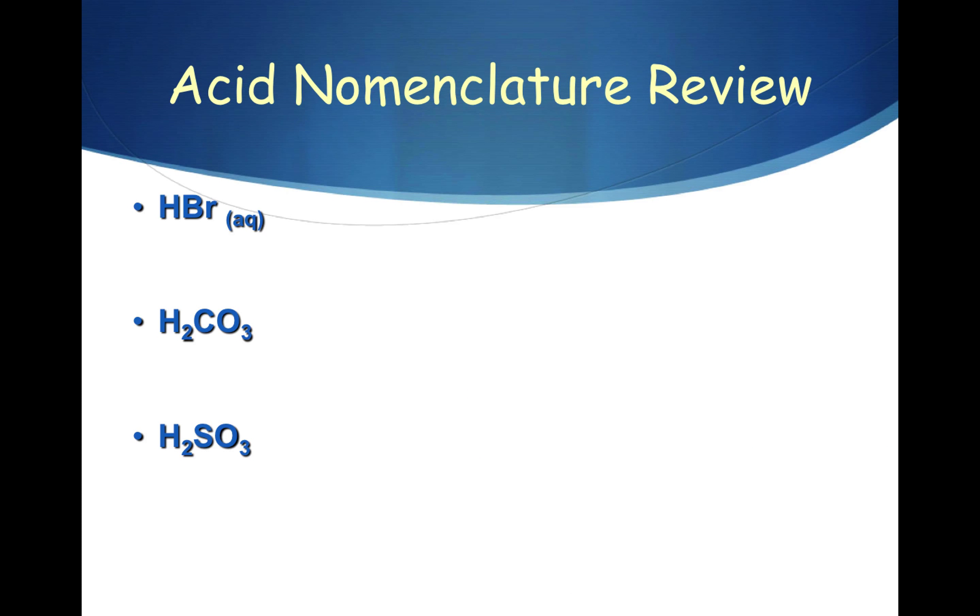So let's take a look at this example, HBr. Do you notice that HBr only has two elements? That means it's going to begin with the prefix hydro and end in -ic. This is called hydrobromic acid.